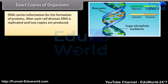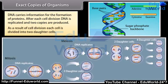After each cell division, DNA is replicated and two copies are produced. As a result of cell division, each cell is divided into two daughter cells.